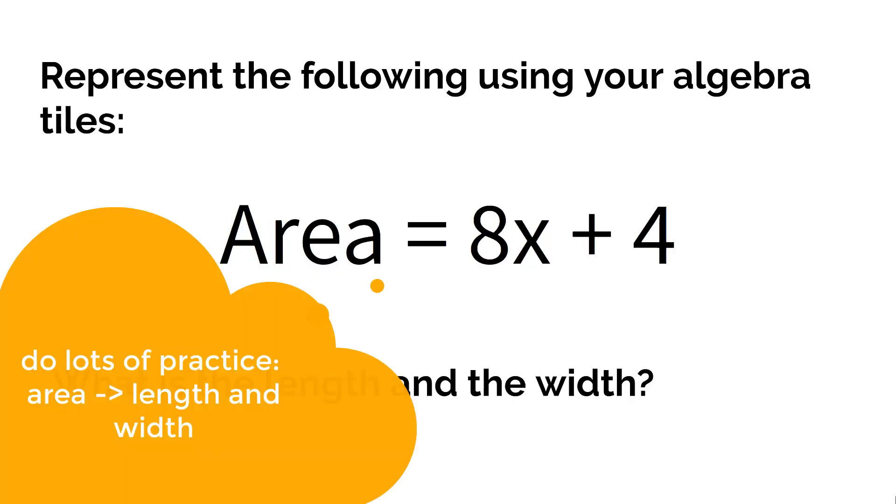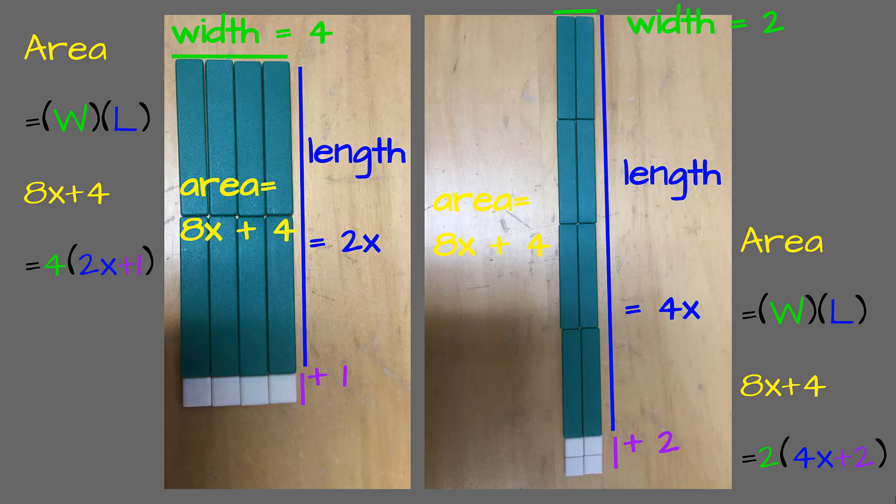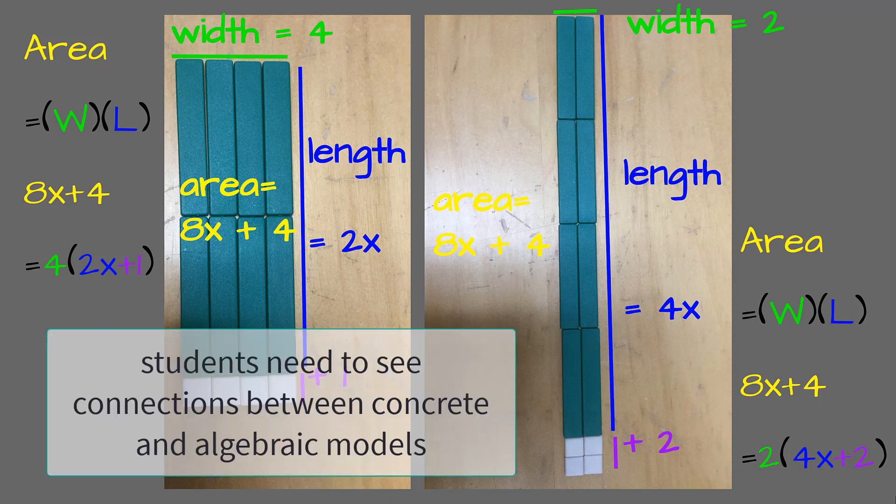Students might need a bit more practice going from the area to the length and width. So 8x plus 4 gives us a chance to find more than one correct rectangle. Students might build both of these. And we might want to encourage them to start recording both the length, the width, and the area of those to start understanding how to measure those and what they mean.